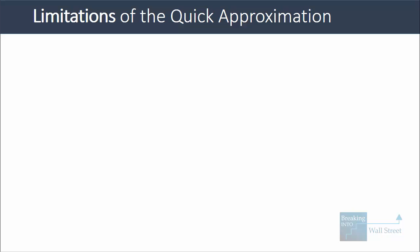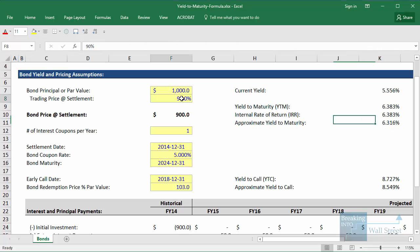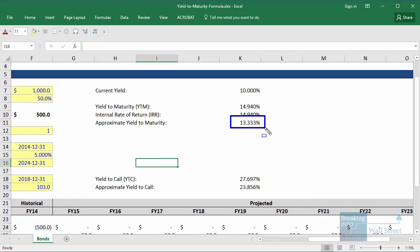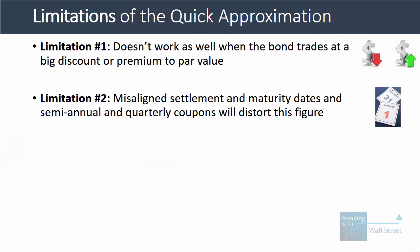There are some limitations of this quick approximation method. First, it's not going to work as well when the bond trades at a big discount or premium to par value. This is not common for healthy companies but you see it a lot with distressed companies and companies in the midst of restructuring. For example, if we change the trading price to 50% — so the bond price is only $500 versus a par value of $1,000 — the approximate YTM is quite different: 13.3% versus 14.94% for real.